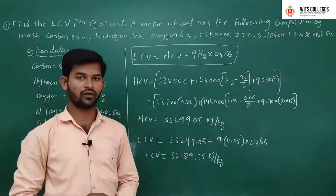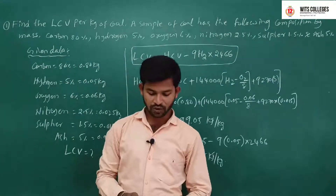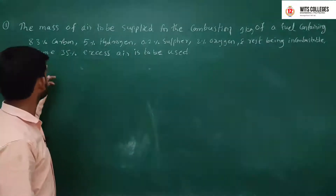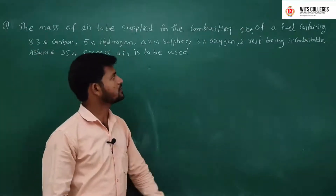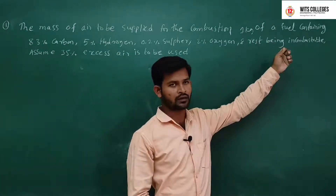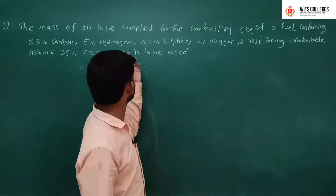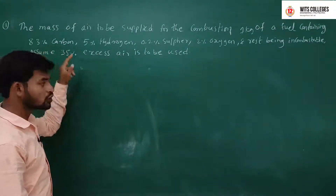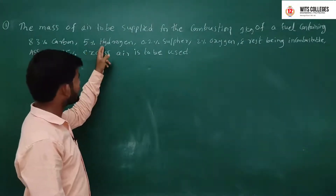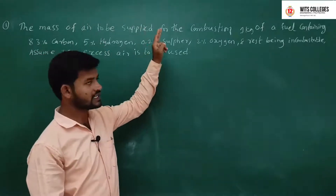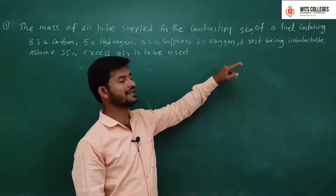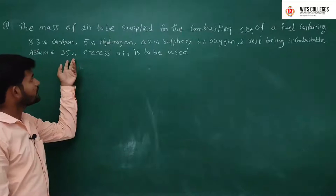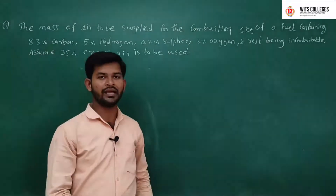In this manner we find out the lower calorific value. The next problem involves combustion of fuel. Find the mass of air to be supplied for the combustion of 1 kg of fuel. The fuel contains 83% carbon, 5% hydrogen, 0.2% sulphur, 2% oxygen, rest being incombustible. Assume 35% excess air is to be used.